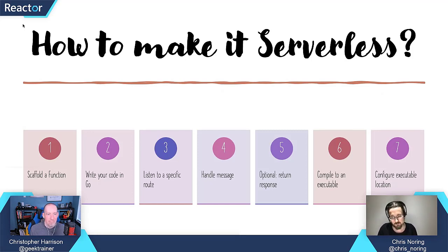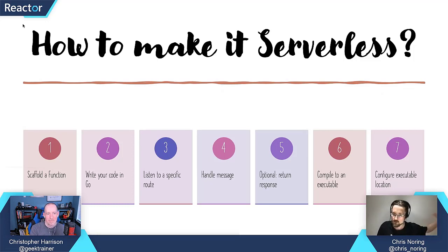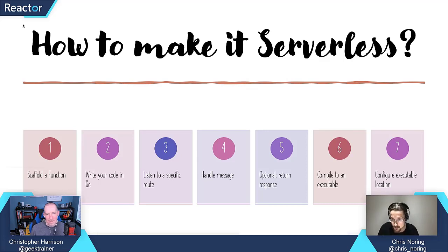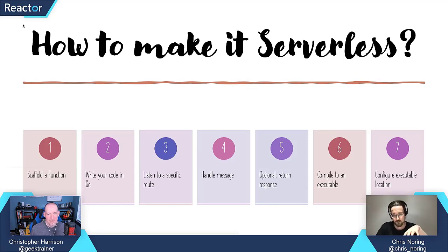If it's the web, it's very customary to return something. But if it's a queue message instead, you don't actually have to return back a response to a queue because the queue shouldn't really know about you. The sixth step is to compile your Go code because you need it to be ones and zeros — you need it to be that executable. Before you run the function, you need to configure it, and I'm going to show you exactly how.